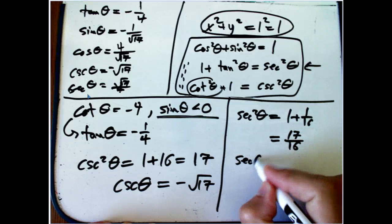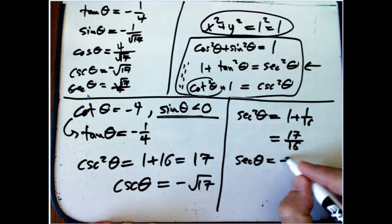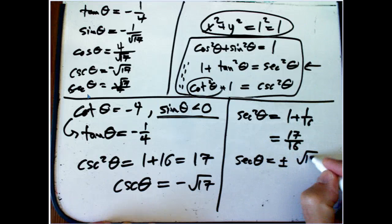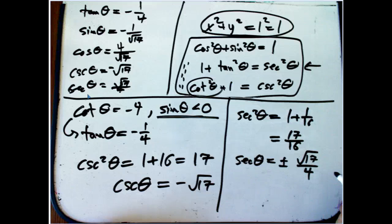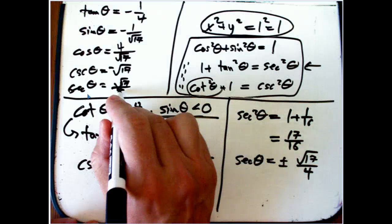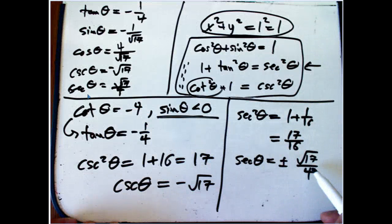Take the square root. Secant theta. And I'm going to leave the plus or minus here because this is a little trickier. Root 17 over 4. Okay.